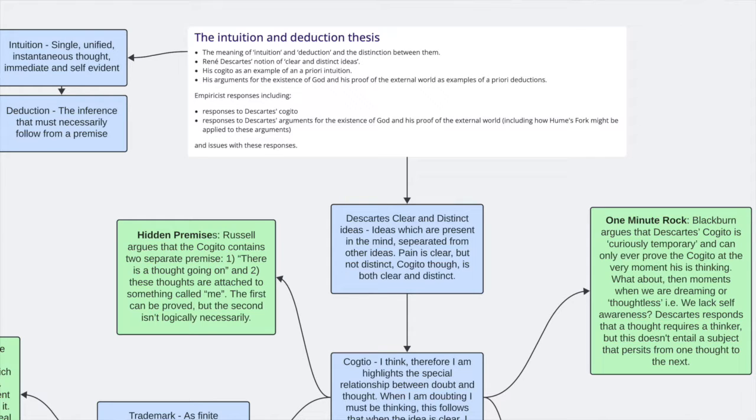But maybe what I won't accept and what doesn't follow necessarily is that something called me is attached. And this is similar to Hume's idea of the bundle of self. There isn't one unified thing that's me. I'm just the continuation and the experience of these thoughts that I'm not even in control of anyway.